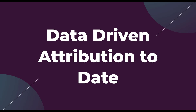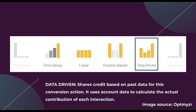The data driven attribution model is one of six different models within Google Ads. The way it works is that it shares credit based on past data for the specific conversion action, using your account data to calculate the actual contribution of each interaction. The other five attribution models are: first click, time decay, linear, position based, and last click. Last click is currently the default and has been the default pretty much since day one of the Google Ads — or at the time AdWords — platform.